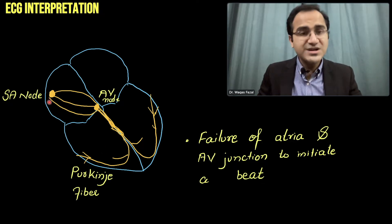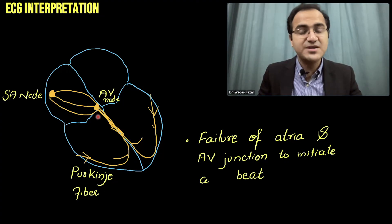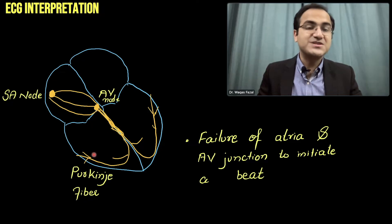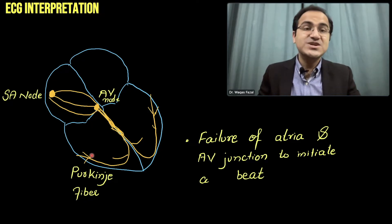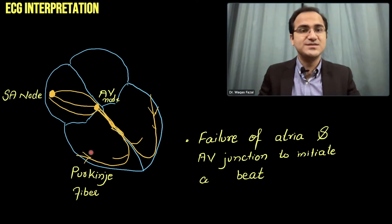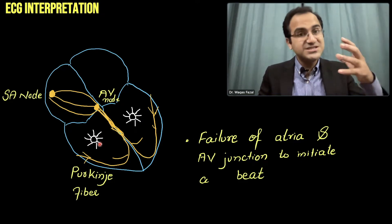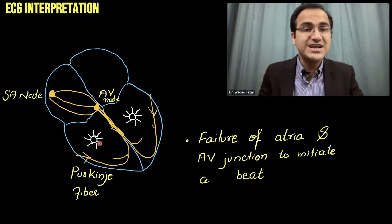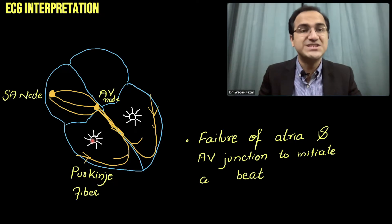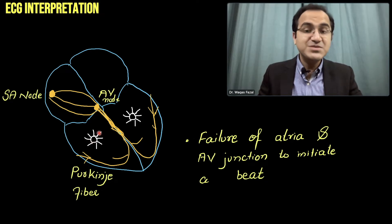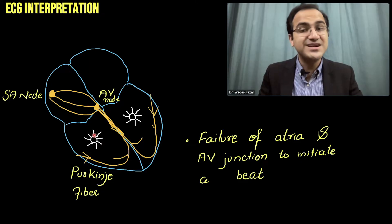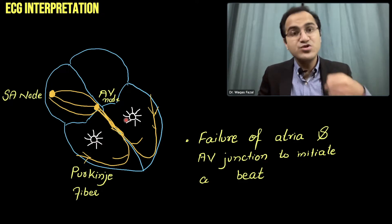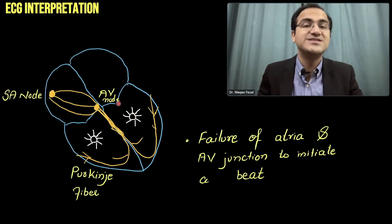If the SA node fails to produce electrical currents, the AV node takes control of pacemaker activity. If the AV node also fails, the Purkinje fibers start producing electrical activity, resulting in contraction of the heart muscles. If the Purkinje fibers also fail, the ventricles themselves generate electrical activity and start depolarizing — that is called a ventricular rhythm. In some cases, damage to myocardial tissue or myocardial ischemia can result in ectopic foci that produce electrical currents and depolarize the ventricles.